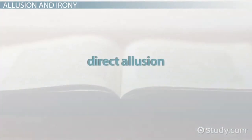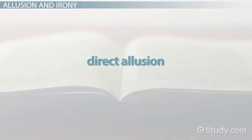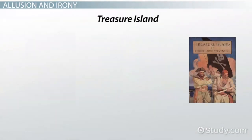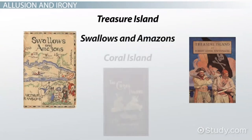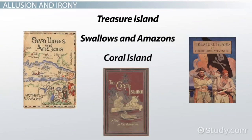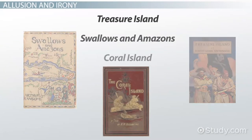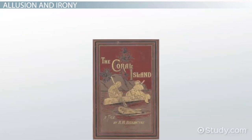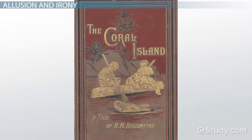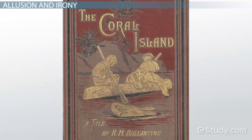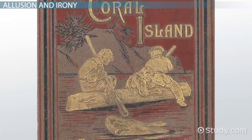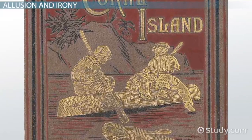An example of a direct allusion in Lord of the Flies is when the boys list their favorite island stories, such as Treasure Island, Swallows and Amazons, and Coral Island. Coral Island was actually mentioned several times, and is a story about boys stranded on an island having an exciting and fun adventure. Referring to this book is an illusion. However, it can also be considered irony.